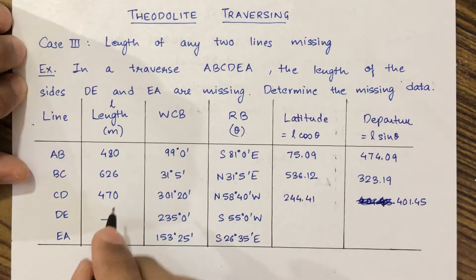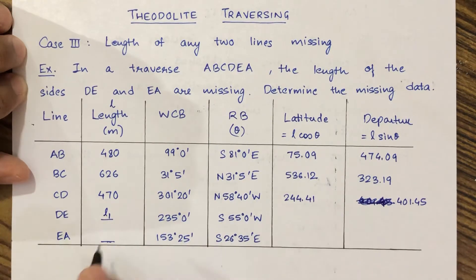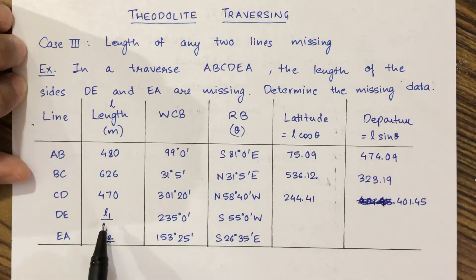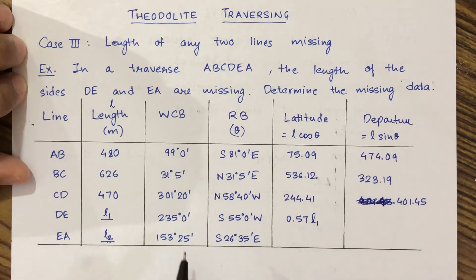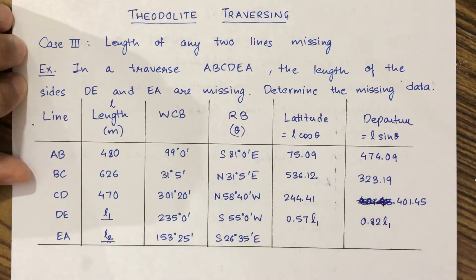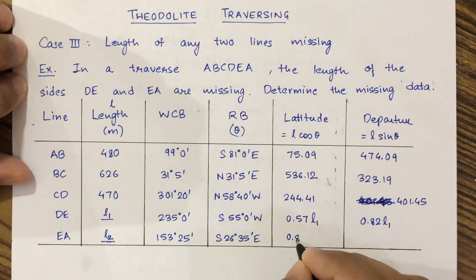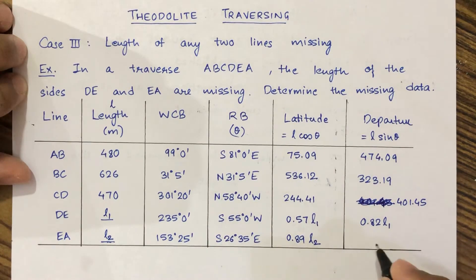Let us denote the length DE as L1 and length EA as L2. We need to find L1 and L2. So L1 cos 55° = 0.57 L1 and L1 sin 55° = 0.82 L1. For L2: L2 cos 26°35' = 0.89 L2 and L2 sin 26°35' = 0.45 L2.